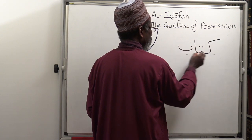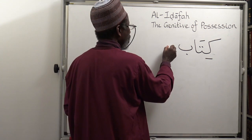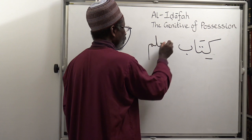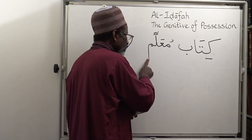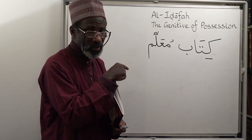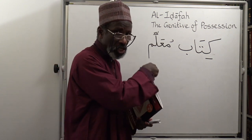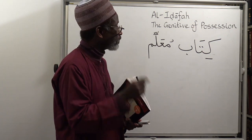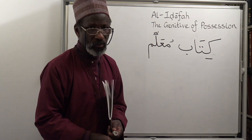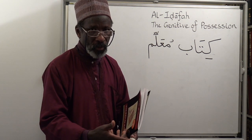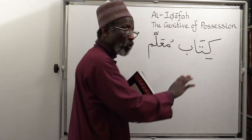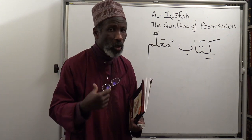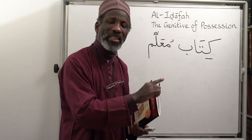Kitab — that's 'a book.' Muallim — a teacher. Now, the book belongs to a teacher: teacher's book. In Arabic, it's 'a book of a teacher.' Now each of these nouns — we need to understand the rules governing them so that you can use them properly and correctly. When I say 'a teacher's book,' that's kitab — that specific book. It's no longer any book; it's a book belonging to a teacher. So it's defined, meaning a specific book we're talking about here.